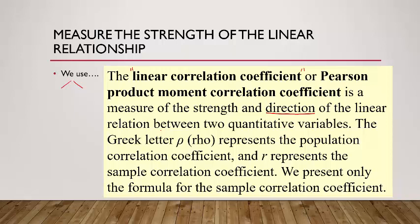There are two linear correlation coefficients. The Greek letter rho is the population correlation coefficient — that's a parameter. We're going to use the letter R to represent the sample correlation coefficient, which is a statistic, because for this type of work we're only going to look at sample data.